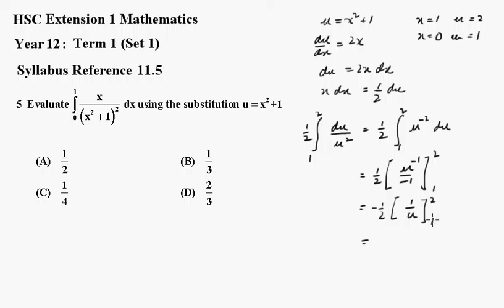If we'd like, we can flip these limits and change the sign. That's one half times 1 over u between 1 and 2.